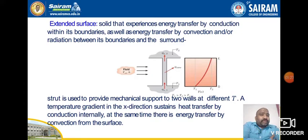You can observe the temperature profile. T1 and T2 are the profiles you can see. T1 is the temperature at the base, and T2 is the external surface exposed to the atmosphere where convective heat transfer is taking place. The heat transfer coefficient H is also given here.